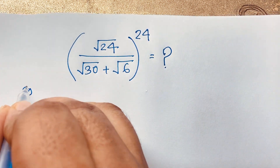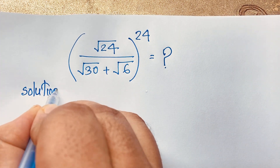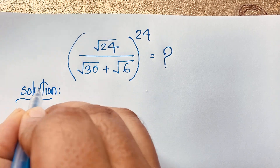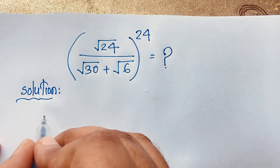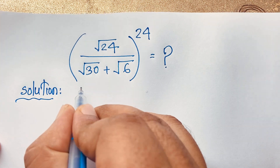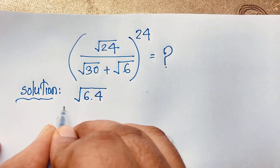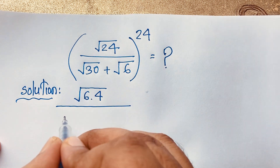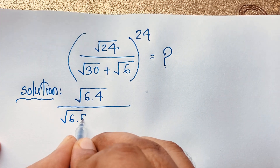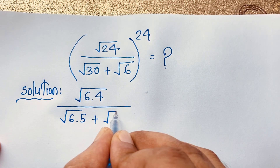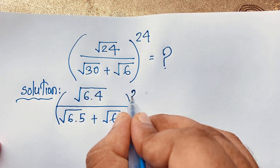So I solved this question step by step — it is a long process. Here we have √24, which can be written as √(6×4) over √(6×5) plus √6, and the whole bracket is to the power 24.